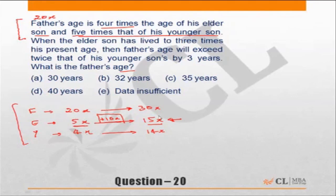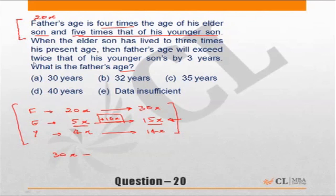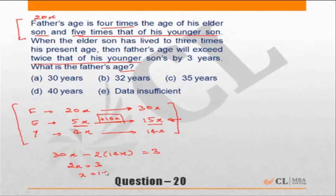So 10x has to be added to both the father's and the younger son's age. Now what does the question say? Father's age of 30x will exceed twice that of his younger son by three years. Twice the younger son's age is 28x. So 30x minus 28x equals 3, meaning 2x equals 3, and x equals 1.5.